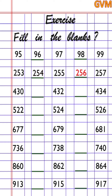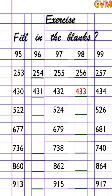Next is 430, 432, and 434. To fill in the blanks: between 430 and 432 the missing number is 431. And between 432 and 434 the missing number is 433. Next is 522, 524, and 526. The missing numbers are 523 and 525.